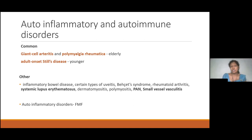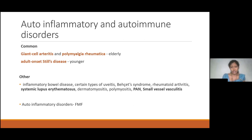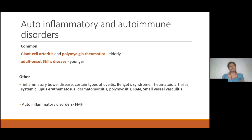Moving on to contributions from auto-inflammatory and autoimmune disorders: auto-inflammatory means there is a defect in the innate immune system. Common causes here in elderly people could be giant cell arteritis or polymyalgia rheumatica. In younger patients it could be adult-onset Still's disease. Other important causes include systemic lupus erythematosus, polyarteritis nodosa, and small vessel vasculitis.